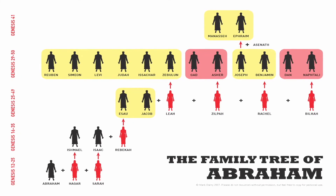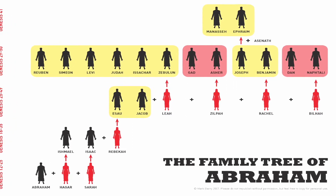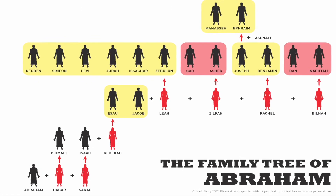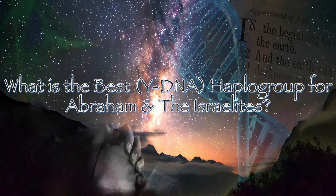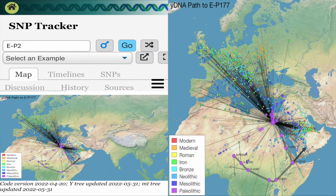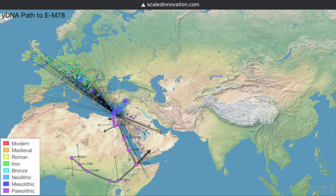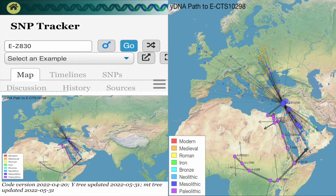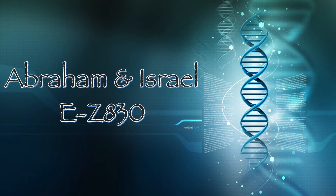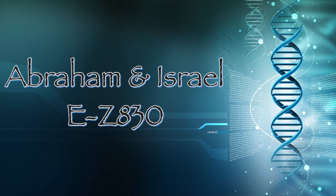Let's look at the best candidates for Abraham and the Israelites' Y-DNA haplogroup. My top three haplogroups for Abraham and the Israelites are: number one, E1B1 also known as E-P2; number two, E-M35 but specifically E-M78 and its subclades; and number three, E-M35 specifically E-Z830 and its subclades.